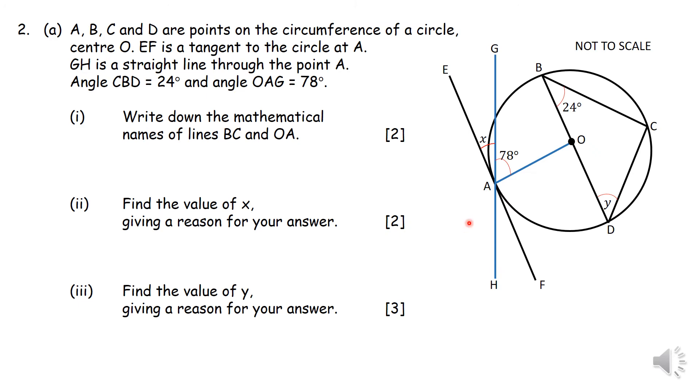Right, so you have a whole question here. You have got a diagram here and then you have got A, B, C, and D. These are points that are on the circumference of a circle. The center is O. Then EF is a tangent. The circle at A and GH is just a straight line that runs through point A. And then you have angle CBD, which is 24 degrees.